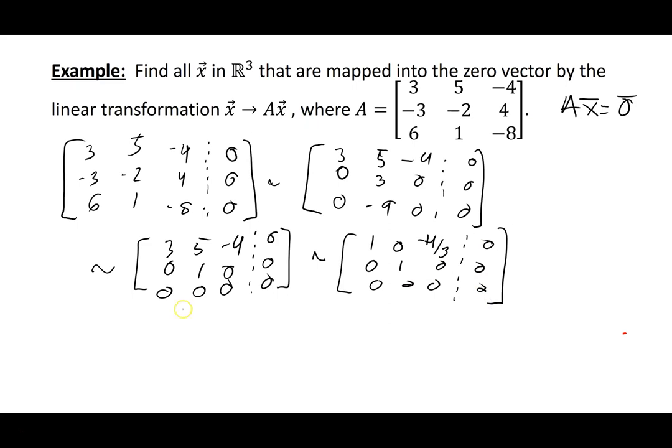So looking at this, this is telling me that the vector x is equal to x1, x2, x3. And looking at the constraints here, I know that x1 has to be equal to 4 thirds x3, so that's 4 thirds x3.